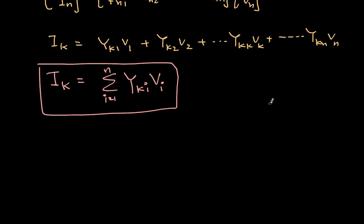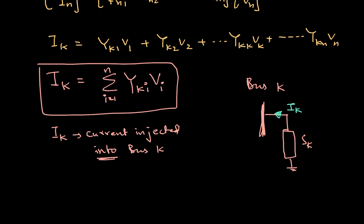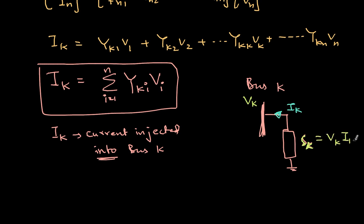In compact summation form: Ik = Σ(i=1 to n) Yki·Vi. Now consider bus k with a load Sk. The current Ik is injected into bus k, with voltage Vk and complex power Sk. These three are related. If we compute Sk/Vk, we relate power and current.